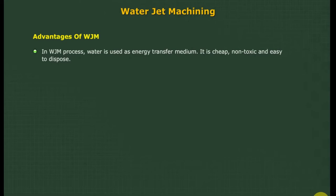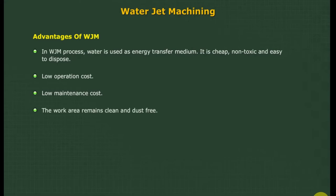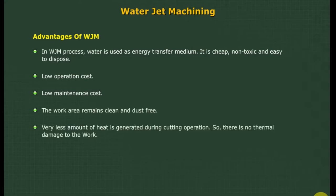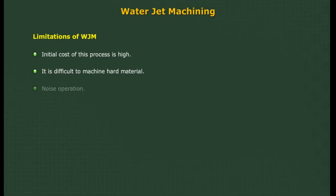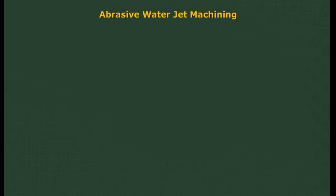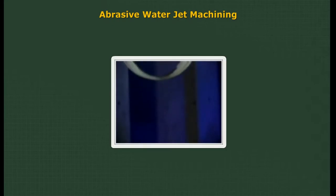Advantages of WJM: water is used as the energy transfer medium — it is cheap, non-toxic, and easy to dispose. Low operation cost and low maintenance cost. The work area remains clean and dust free. Very little heat is generated during cutting, so there is no thermal damage to the work. Easily automated. Limitations of WJM: initial cost is high; it is difficult to machine hard materials; and the process is noisy.